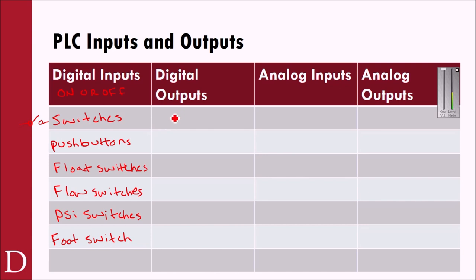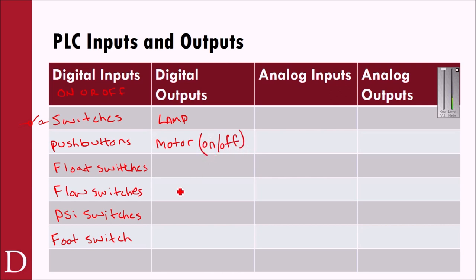Digital outputs are things the PLC turns on and off based on inputs. Using the traffic light example, the loop detector triggers a lamp — hopefully green so you can move through the intersection. Other digital outputs include motors — when I say digital, I just mean the ability to turn on or off, so if it's hooked up to a motor starter, it's a digital output. I could also turn on a fan, a buzzer, a bell, or motors driving conveyor belts. Anything that's simply on or off we consider a digital output.